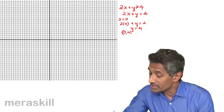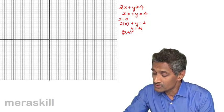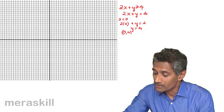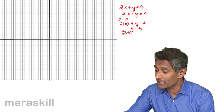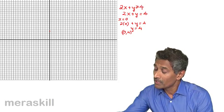So (0, 4) — marking this on the graph at 0 on the x-axis and 4 on the y-axis — this is one of the points through which the line passes.